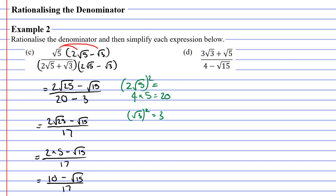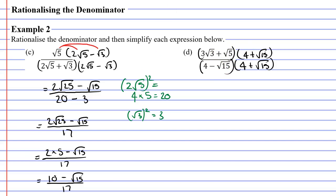Let's now move on to question D. Focusing on our denominator, which is 4 minus root 15, we multiply by 4 plus root 15. We multiply the numerator by the exact same expression, 4 plus root 15. Notice that our numerator has two terms, so we need to put them in brackets and use the FOIL method.